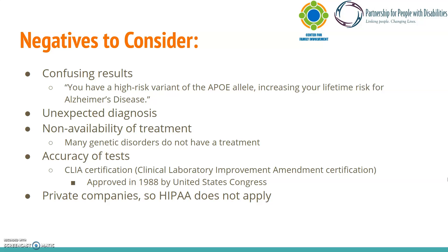A brief note on what differs with these companies compared to clinical genetic testing is that they are, at the end of the day, private companies. These are not meant to provide a diagnosis, but rather a risk of a positive test result. Due to this, companies like 23andMe and Ancestry are actually not subject to HIPAA. So if 23andMe wants to provide your genetic information to a study, and it's part of the agreement of taking part in their service that you agree to, then they can share it with whatever third parties they wish.